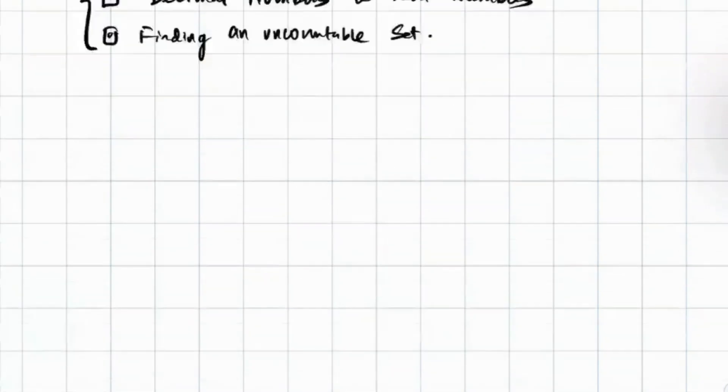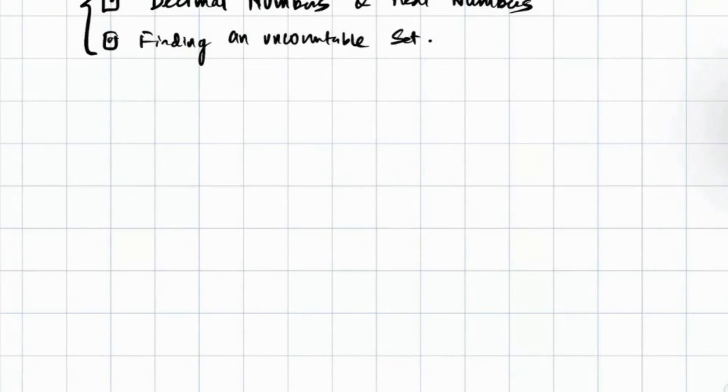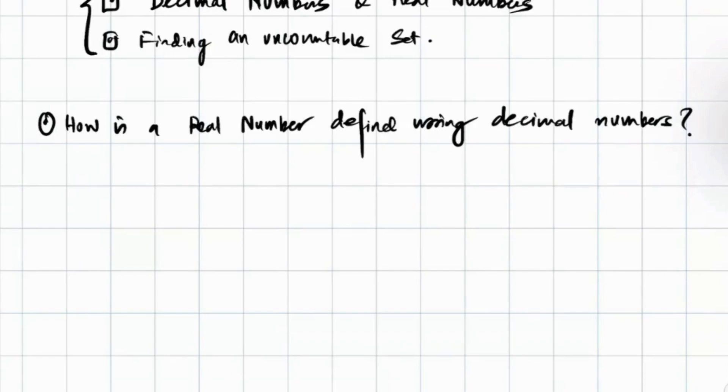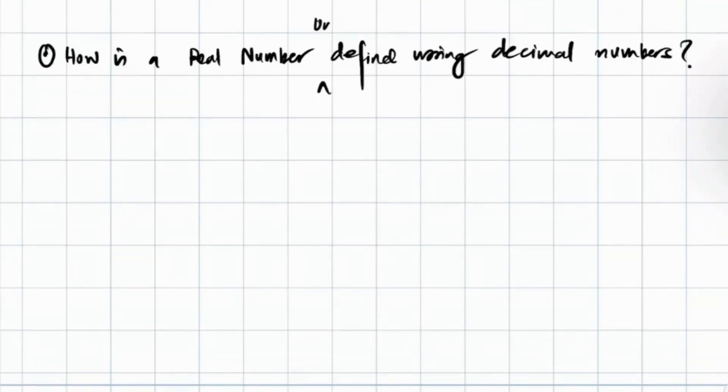Therefore, everything is based on the decimal system. 10 integers are used to find and represent any number possible they have found in history. They used it while farming, buying food for their children, whatever they could use in the old days, the before-Christ period. So now, how is a real number defined using decimal numbers?